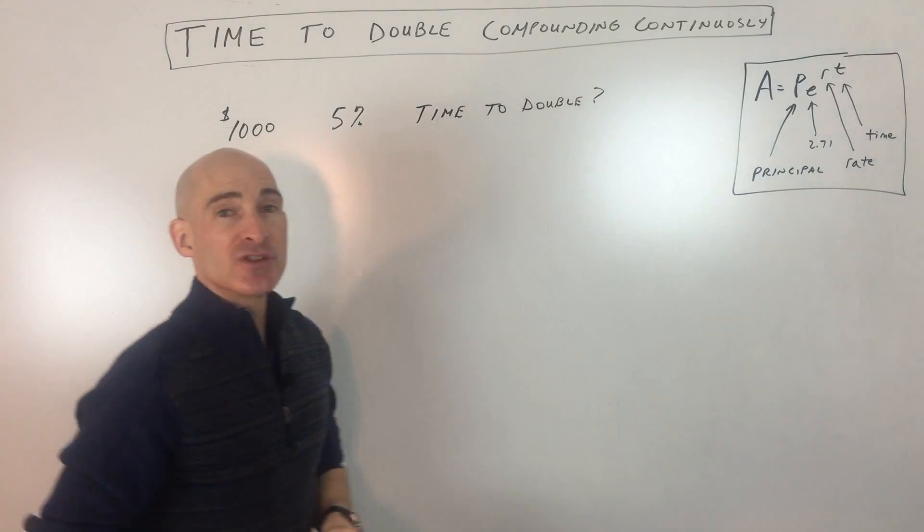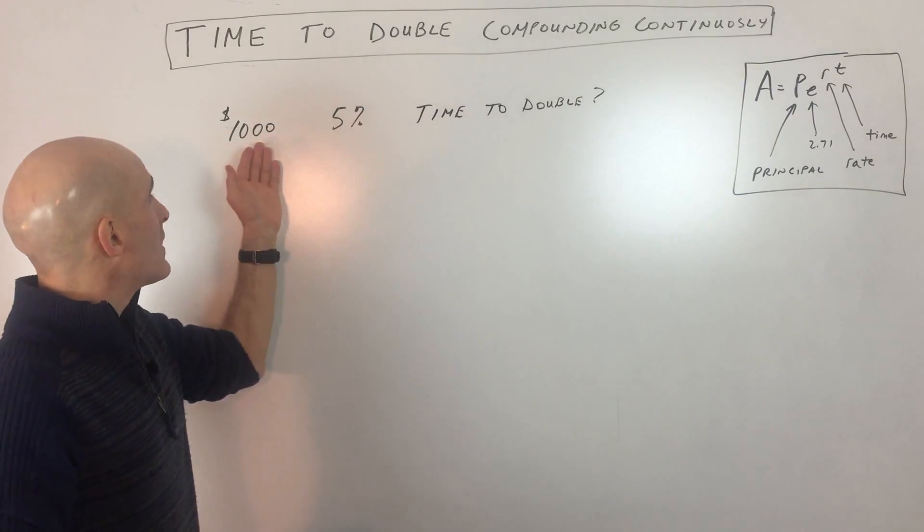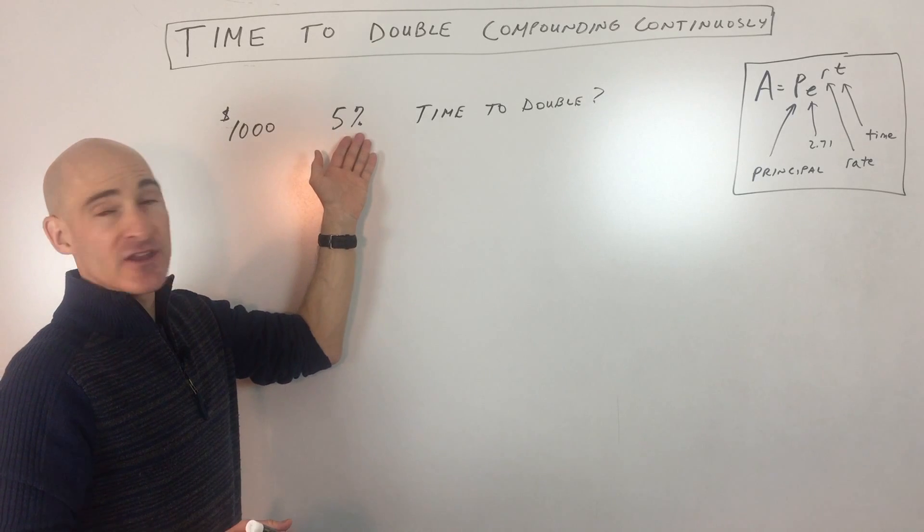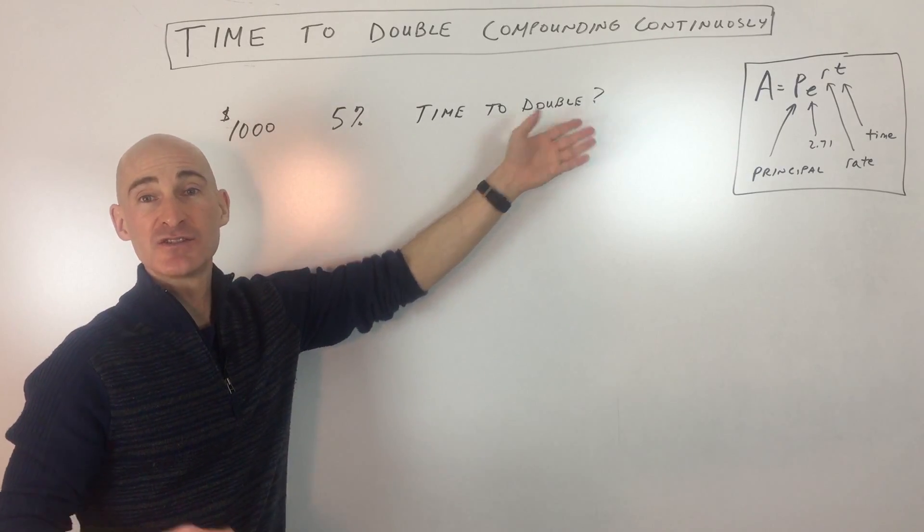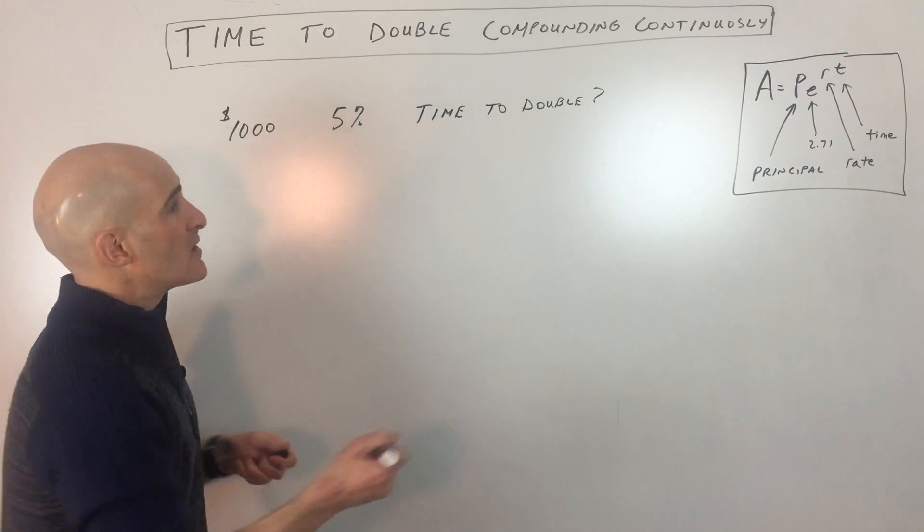Let's get into an example and talk about how to work with this. Say you start with $1,000 and the interest rate is 5% and you're trying to figure out how long is it going to take to double your money. Let's go ahead and use our formula.